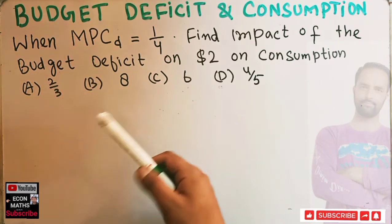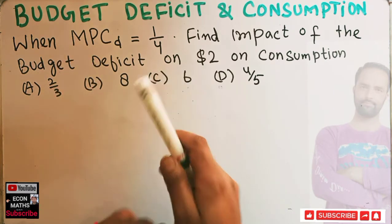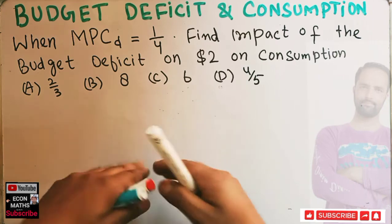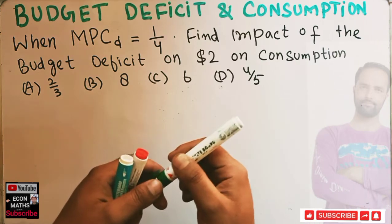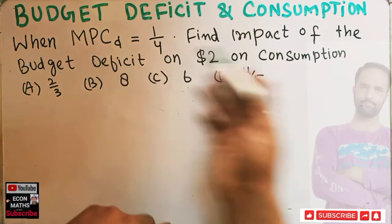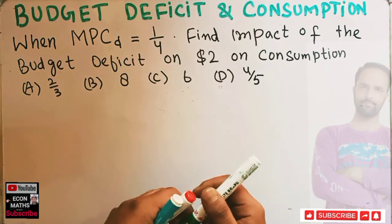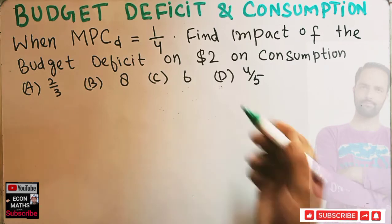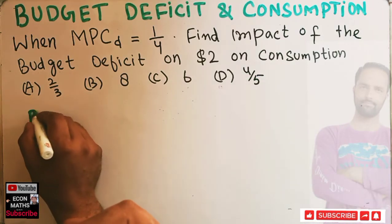This is not the usual marginal propensity to consume — it is the marginal propensity to consume out of disposable income. The relationship between these I have explained in earlier videos.